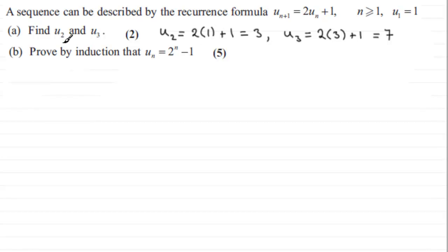Now for part b, we've got to prove by induction that the nth term in the sequence, u n, is equal to 2 to the power n minus 1. And to do this by induction, in the usual way, what we have to do is show that it's true for when n equals 1, and then assume that it's true for n equals some particular integer, say k.